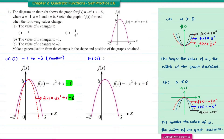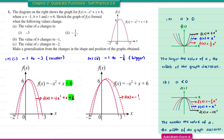For a2, the value of a changes from -1 to -1/4, which means the value of a is getting bigger. Therefore the width of the graph increases. This is the graph of f(x) = -¼x² + x + 6. Both functions have the same y-intercept, which is positive 6, so both graphs will intersect f(x) at the point 6.